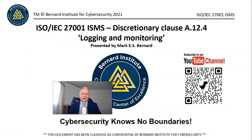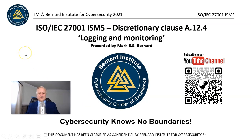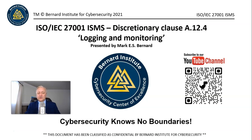Hi, it's Mark Barnard here from the Barnard Institute for Cybersecurity Excellence. Today I'm here to talk about discretionary control clause A.12.4 from the ISO 27001 Information Security Management System, which is a GRC framework. This control specifically talks to logging and monitoring, and there are four control points we're going to cover.